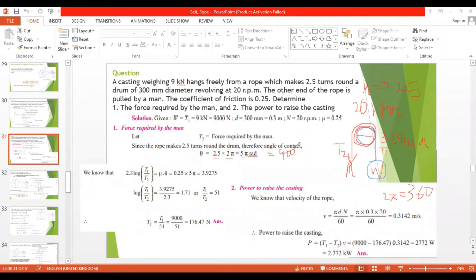So our mu is given, T1 and T2 - we have actually found. We will put in the equation: 2.3 log T1 by T2 equals mu theta. This is the equation. Mu is 0.25, theta is 5 pi. So when you multiply you will have 3.9275 radians.